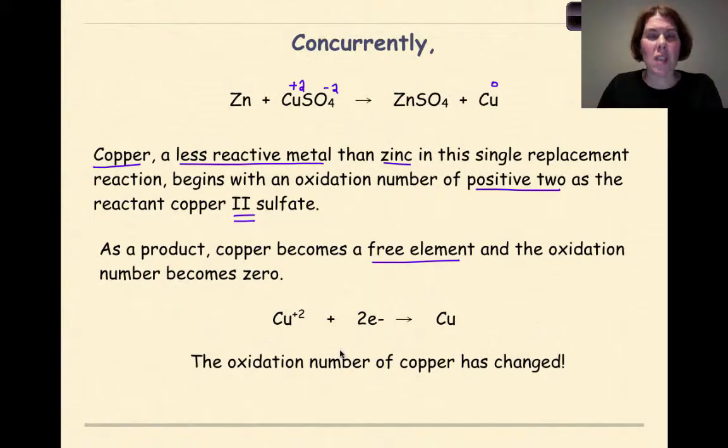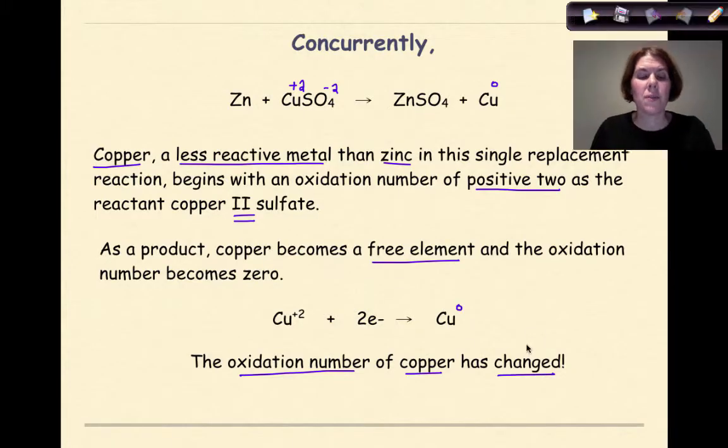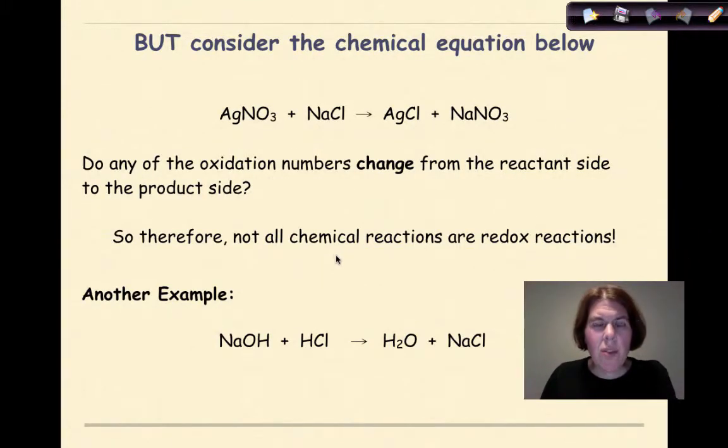Therefore, we can write the reduction half reaction of Cu²⁺ plus two electrons yields Cu⁰. Again, we notice that as we go from reactants to products, the oxidation number of copper has changed. When we see a change in oxidation numbers as we go from reactants to products, that tells us we're dealing with a redox reaction.